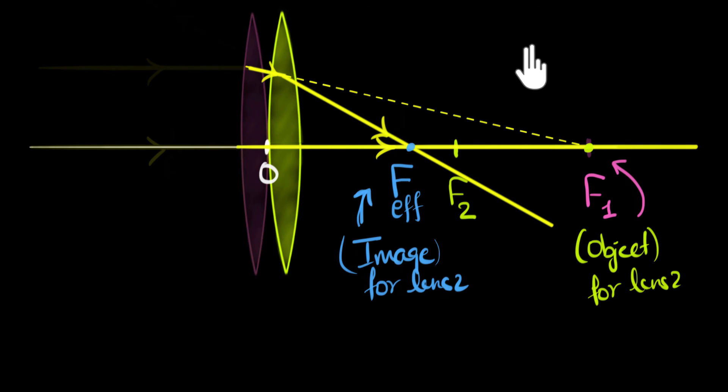All right, let's do this. Lens formula tells us 1 over the focal length is equal to 1 over the image distance V minus 1 over U. So let's apply this for lens two. For lens two, the focal length is F2, so 1 over F2.